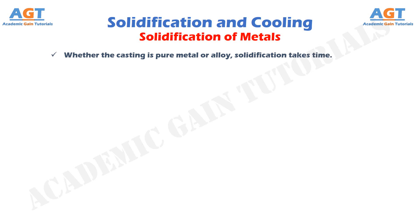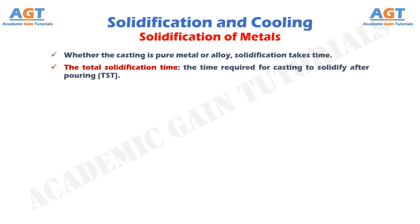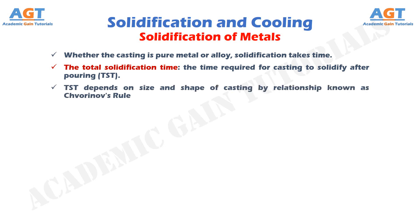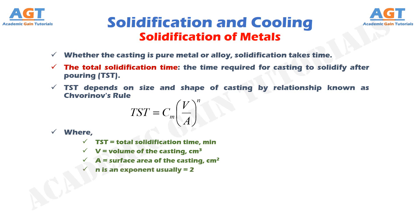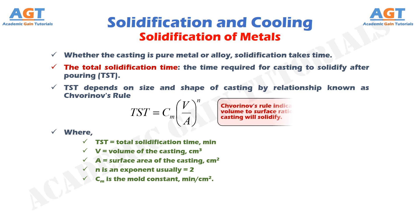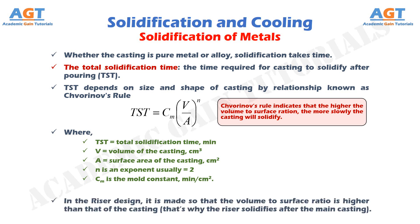Whether the casting is pure metal or alloy, solidification takes time. The total solidification time (TST) is the time required for the casting to solidify after pouring. The total solidification time depends on the size and shape of the casting by a relationship known as Chvorinov's rule: TST = CM × (V/A)^N, where TST is the total solidification time in minutes, V is the volume of the casting in cubic centimeters, A is the surface area of the casting in square centimeters, N is an exponent usually equal to 2, and CM is the mold constant in minutes per square centimeter. Chvorinov's rule indicates that the higher the volume-to-surface ratio, the more slowly the casting will solidify. In riser design, the riser is made so that the volume-to-surface ratio is higher than that of the casting — that's why the riser solidifies after the main casting.